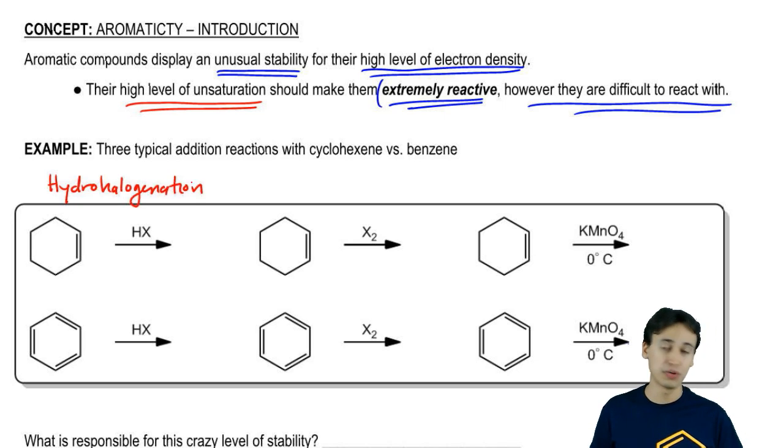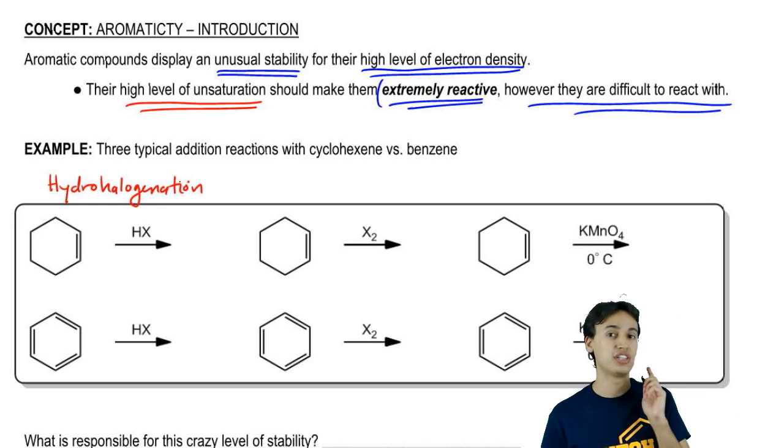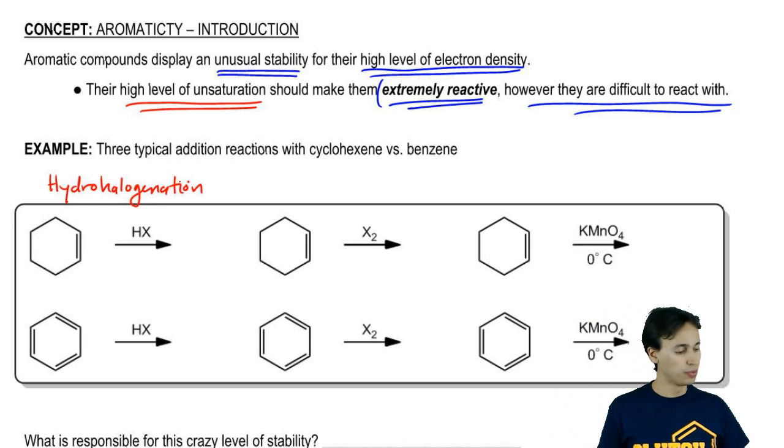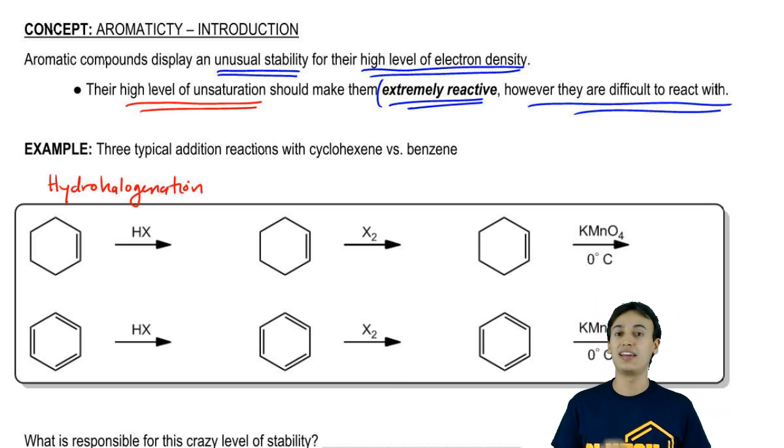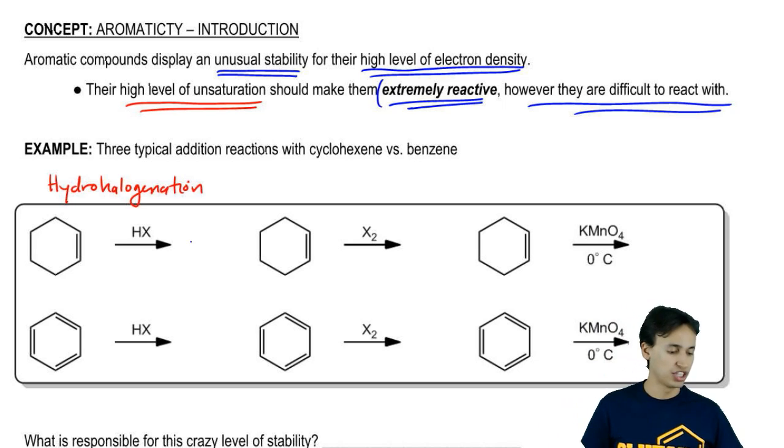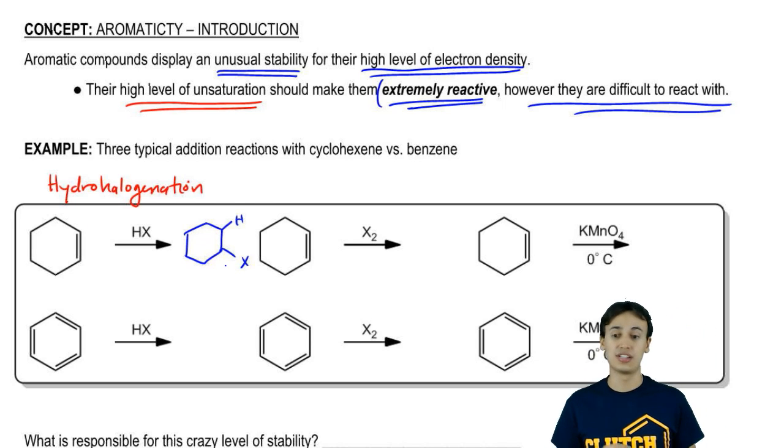You can find more information about all these reactions in the addition chapter of your textbook. Hydrohalogenation was a reaction that added a hydrogen and a halogen across the double bond. What we would expect is that you would get an H and an X added to the double bond. Guess what happens when you react HX with a benzene? Back in the old days, in the 1800s, scientists predicted that we would wind up getting three halogens reacting because you have three double bonds.